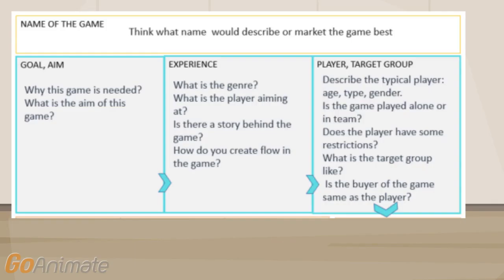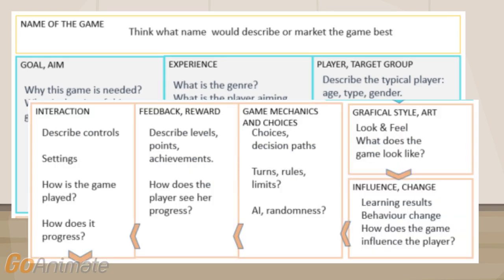This game design canvas is divided into three main parts. In the top part of the canvas you define the players and what they are experiencing as they play the game. In the middle part the base game mechanics are designed. What does the player actually do? What behavior within the game is encouraged or discouraged?